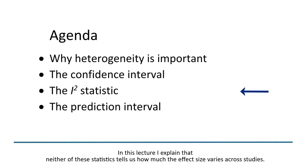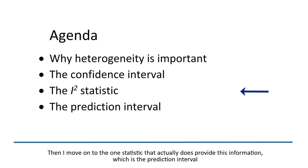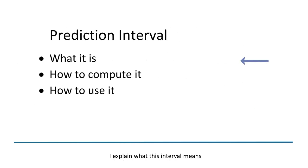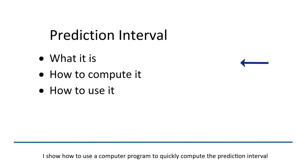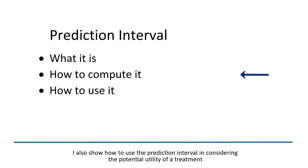In this lecture, I explain that neither of these statistics tells us how much the effect size varies across studies. Then I move on to the one statistic that actually does provide this information, which is the prediction interval. I explain what this interval means, show how to use a computer program to compute it, and show how to use it in considering the potential utility of a treatment.